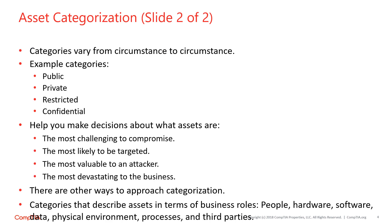There are other approaches to categorization. For example, you might categorize assets in terms of the role they play in the business. Such categories might include: People, particularly personnel, customers, and other business stakeholders; Hardware, particularly computing equipment and peripherals; Software, particularly operating systems and applications; Data, particularly proprietary data or data about people; Physical environment, particularly the office and where it is located; Processes, particularly processes that enable the business to provide products and services directly to customers; and Third parties, particularly business partners and members of the organization's supply chain.